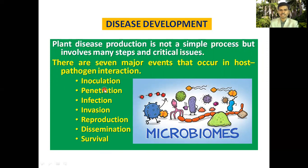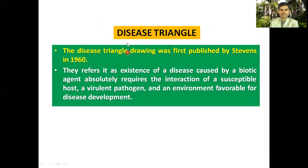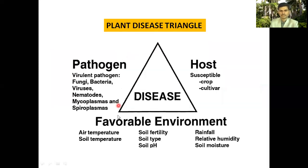First of all we will see the disease triangle. In most books of plant pathology the disease triangle is beautifully described. It was first published by the scientist Stevens in 1960. The scientist referred to it as the existence of disease, where the interaction of a susceptible host, a relevant pathogen, and favorable environmental conditions are absolutely required for disease to develop.